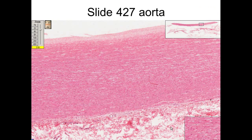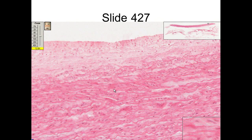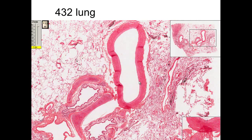Coming from the heart you have the aorta, which is elastic. The intima is composed of endothelial cells and a sub-endothelial connective tissue, then the media, then the adventitia. Looking closely you can see the sub-endothelial connective tissue and then muscle layers and elastic fibers.